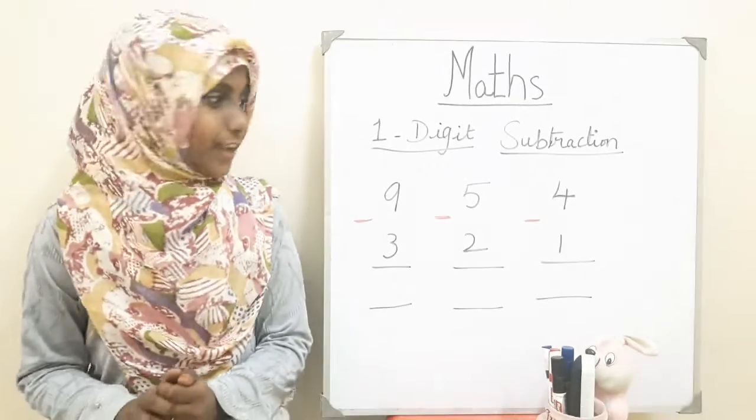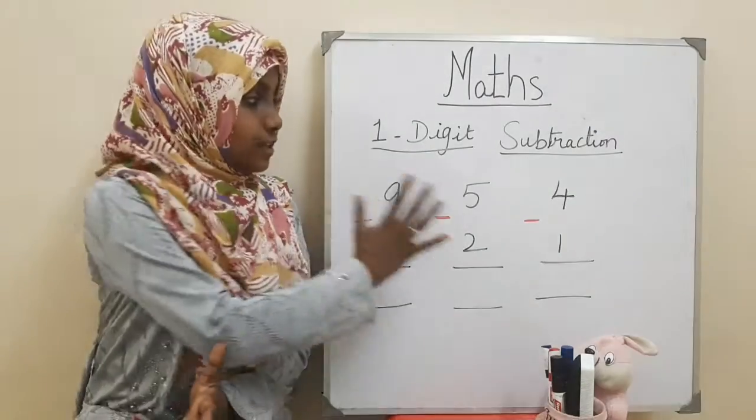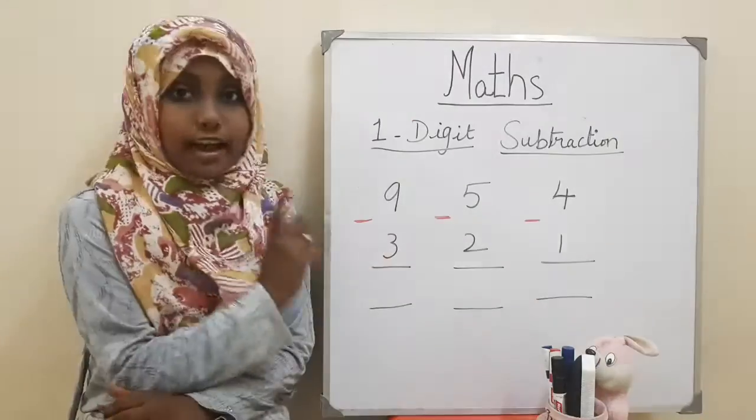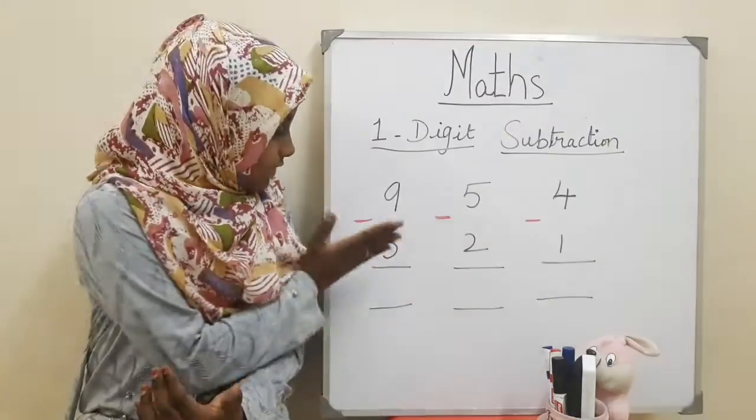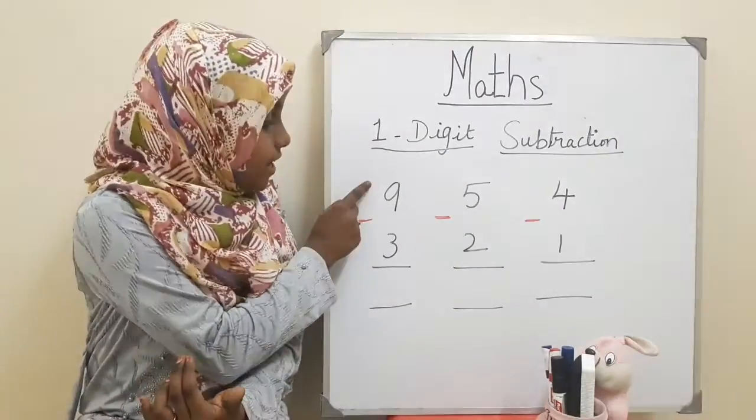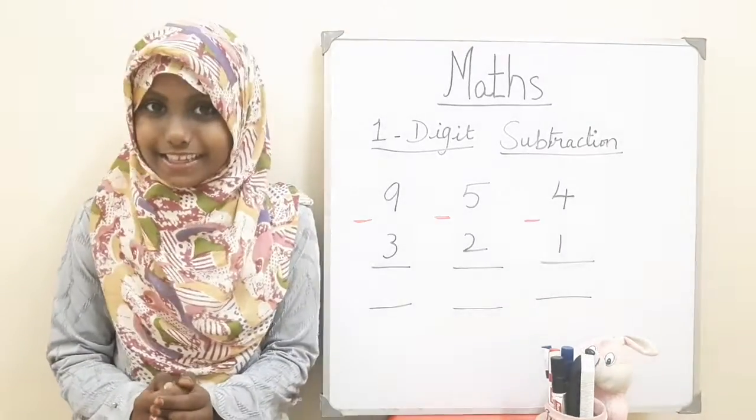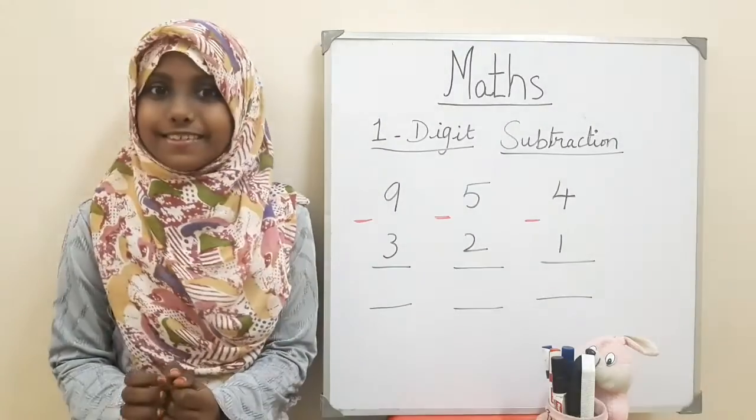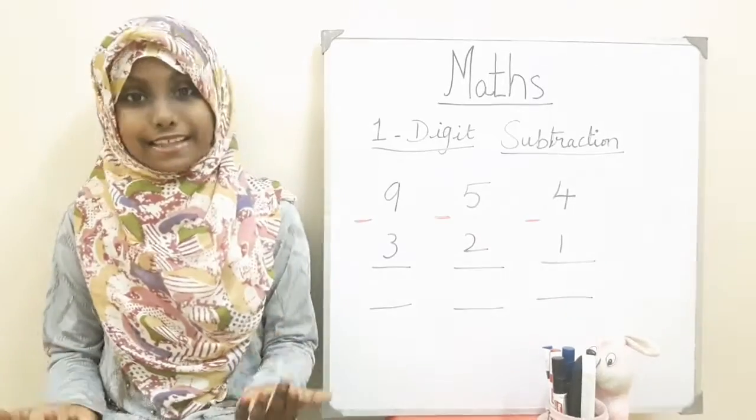Now let us start the story. We have these three sums, and let's start with this sum: nine minus three. Let us see the story of this first sum. Let's just take the name as Mini.